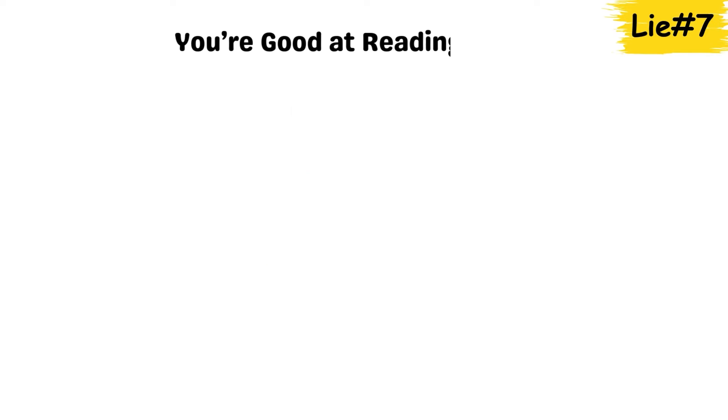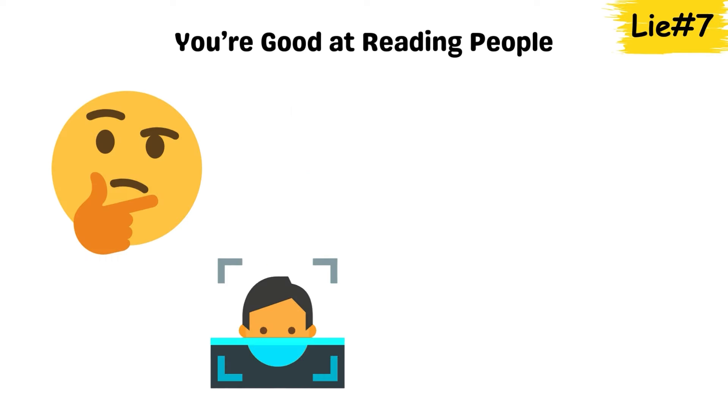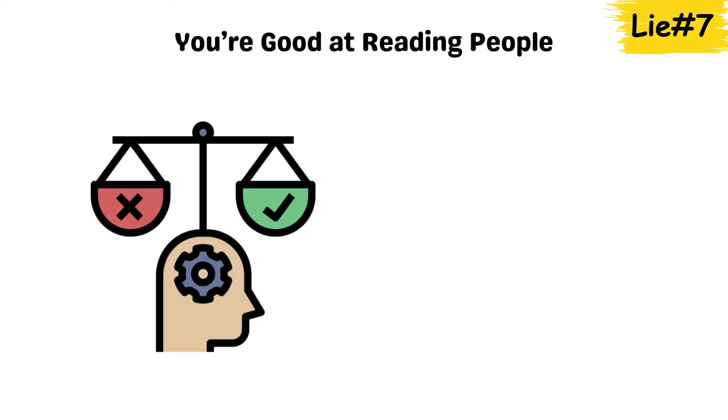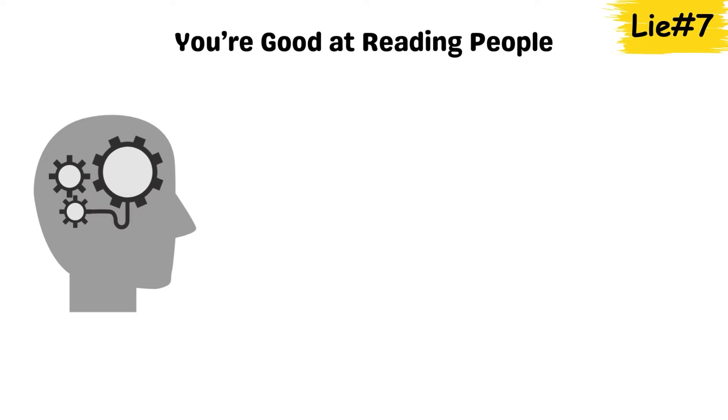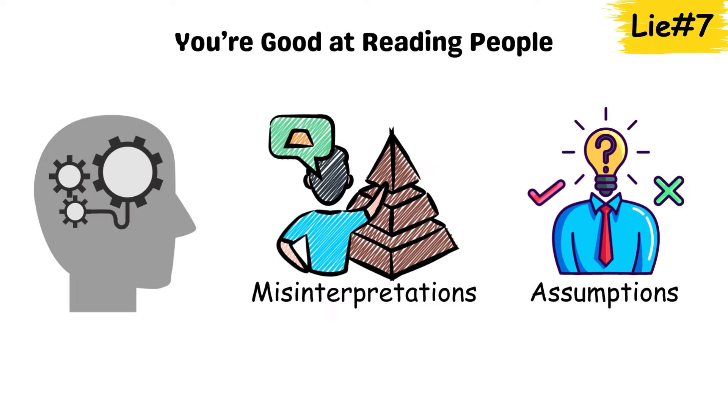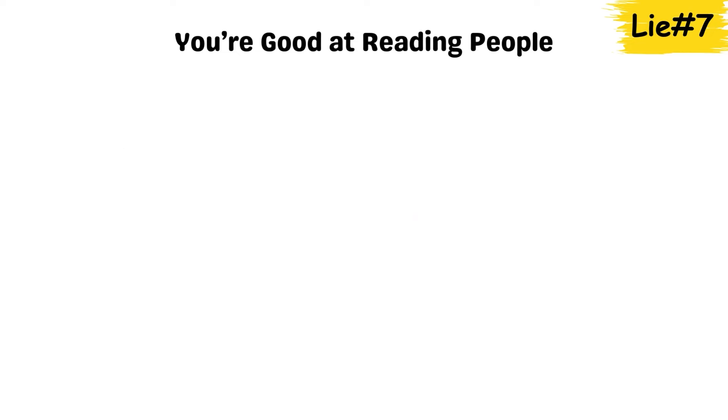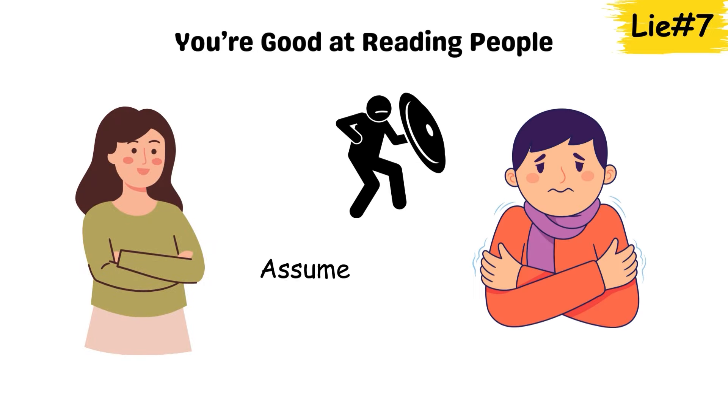Lie 7. You're good at reading people. You might think you can read people well, but your brain often uses shortcuts, or heuristics, to make snap judgments about others. These mental shortcuts can lead to misinterpretations and assumptions that aren't always accurate. For example, if someone crosses their arms, you might assume they're defensive, but they might just be cold.